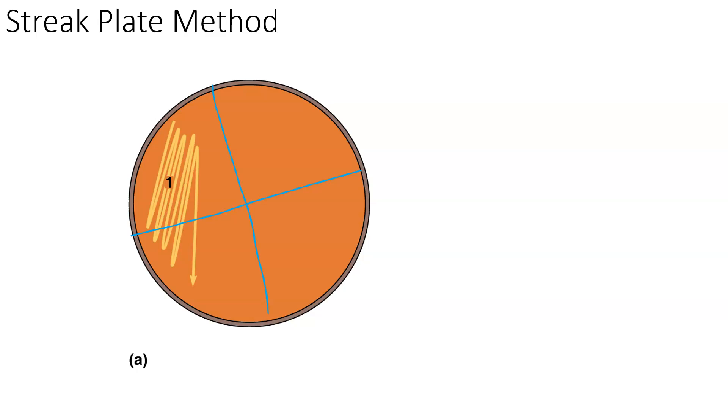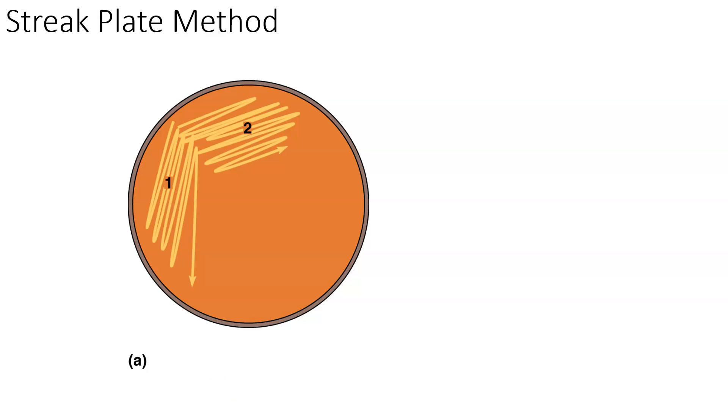Then you'll flame the loop. You will not touch the original culture ever again. You will then streak through our original quadrant and pull some of that bacteria into quadrant two. So after you streak quadrant one you'll then pull through quadrant one and inoculate quadrant two.